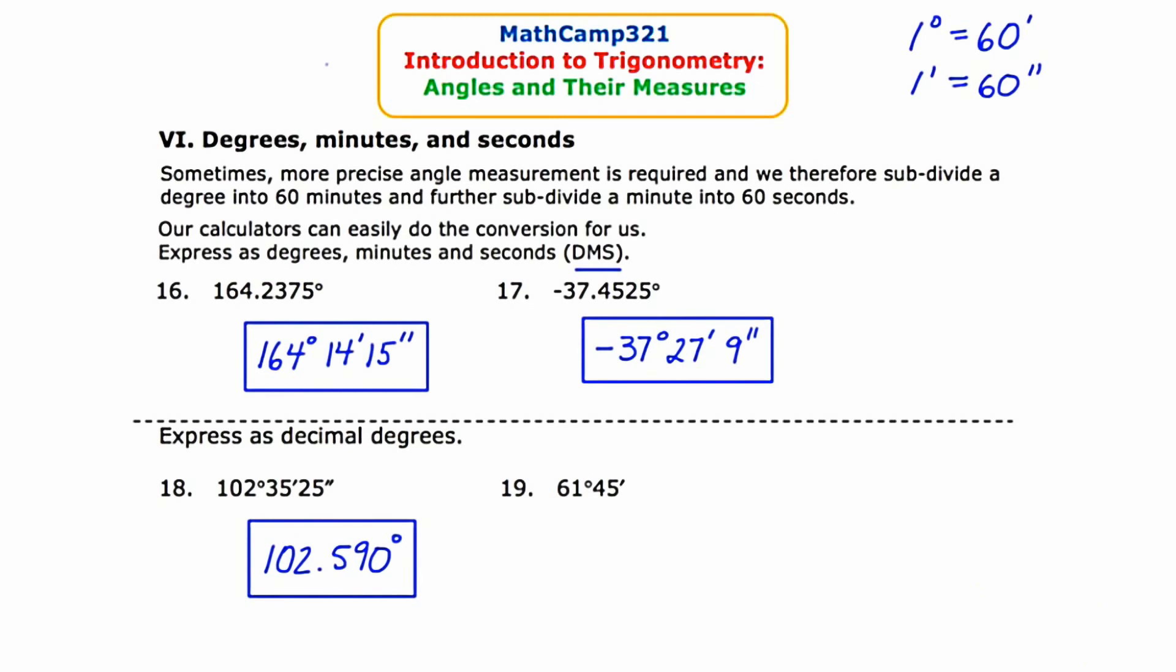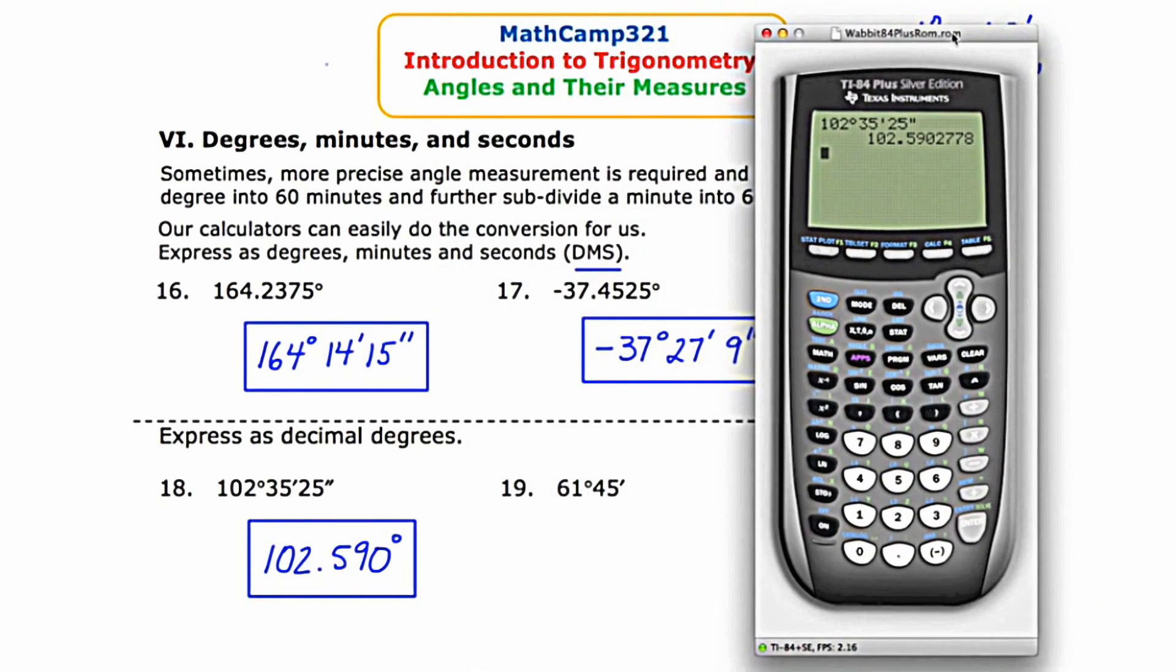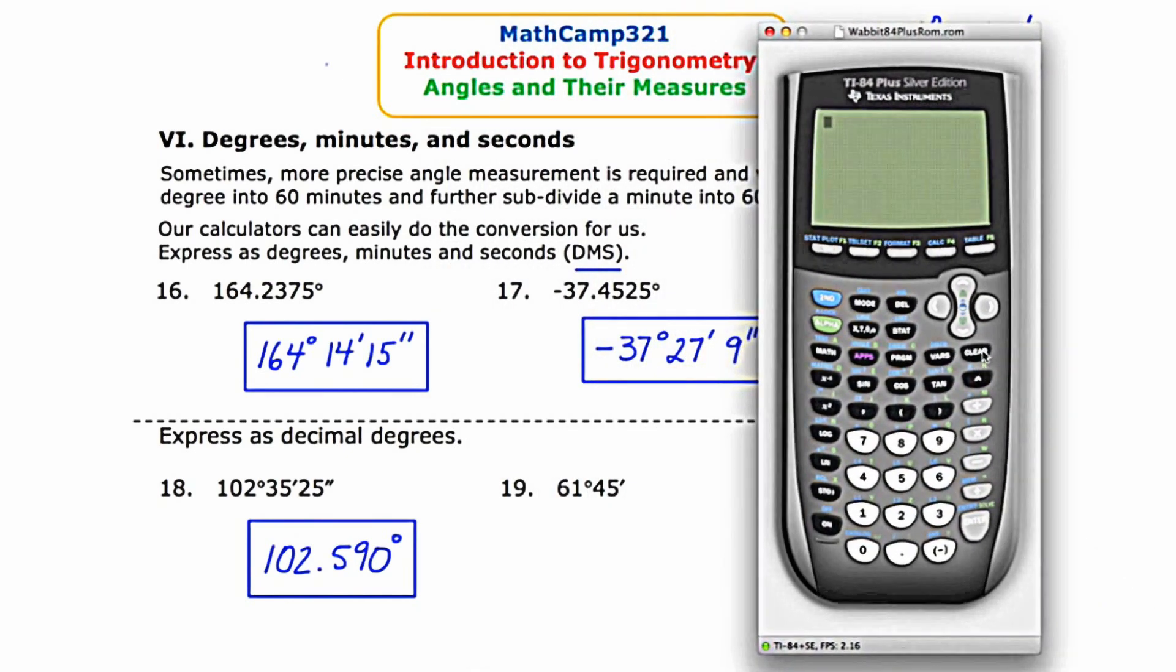Now I'll take a look at the last one. I've queued the calculator up again. I'm clearing the existing entry and I'll start by typing in 61. I'll get the angle menu, grab the degree symbol, and then I'll type in 45 and grab the minutes symbol. This particular problem doesn't have any seconds, so I'm done. I just have to press enter and we get 61.75 degrees.